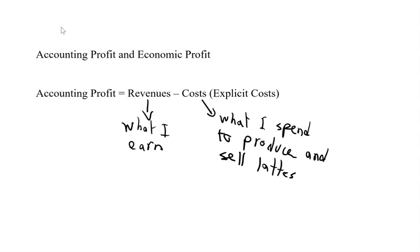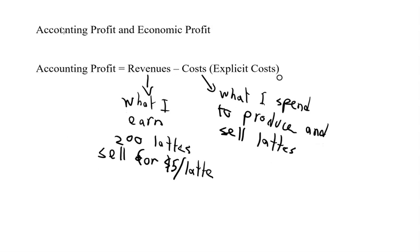So in my case, let's say I produce 200 lattes and I sell for $5 per latte. So my revenue would be 200 times $5, which would be $1,000. So basically I'm earning $1,000 by selling 200 cups of latte for $5 per cup.